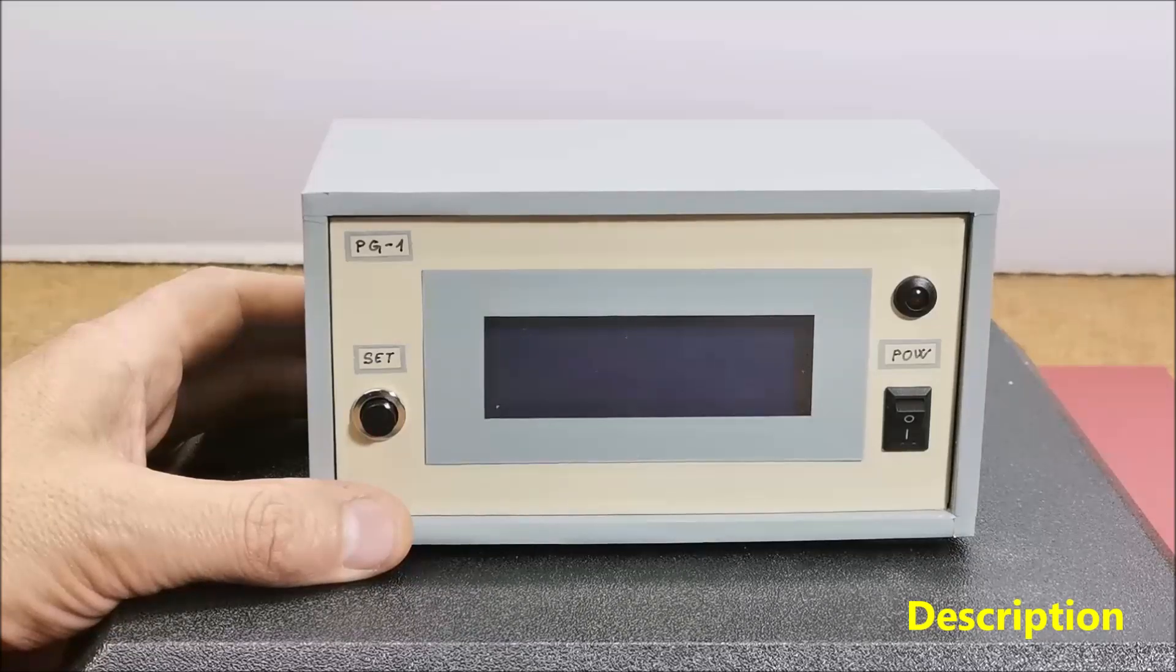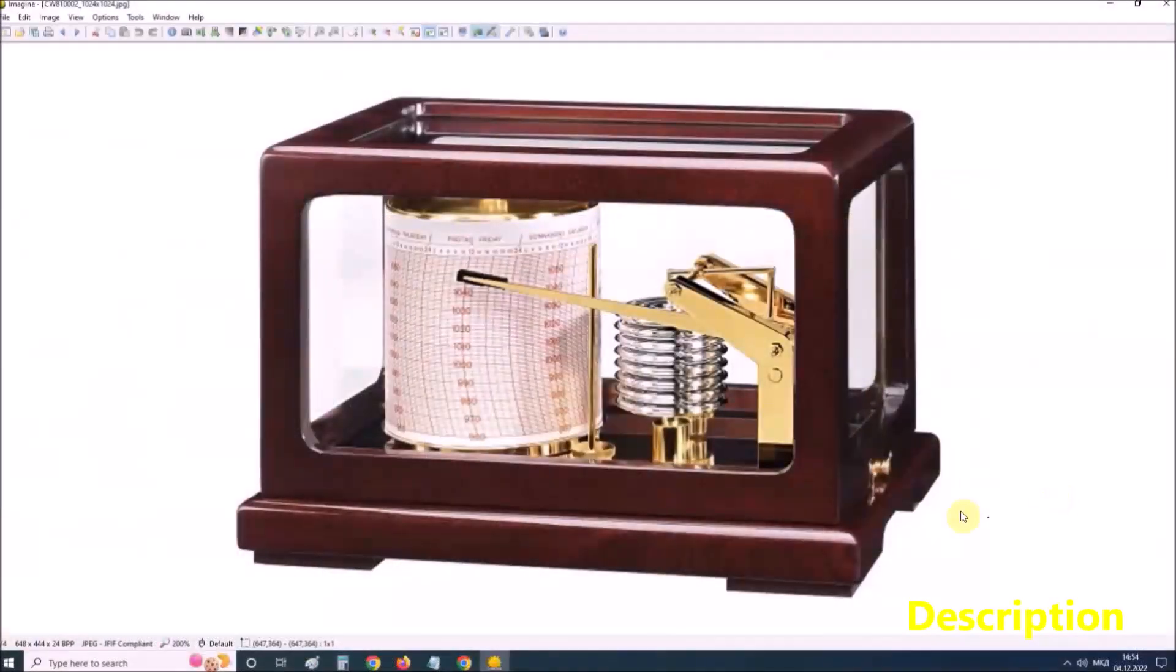This instrument is also used to make a continuous recording of atmospheric pressure. The former barographs use the pressure sensitive element which is linked to a pen arm in such a way that the vertical displacement of the pen is proportional to the changes in the atmospheric pressure.